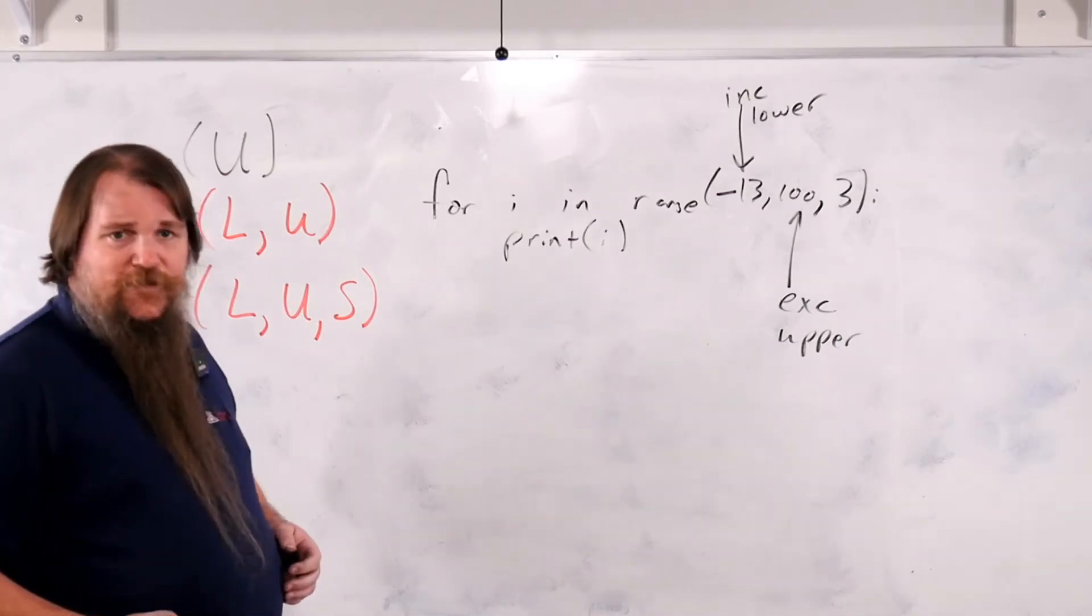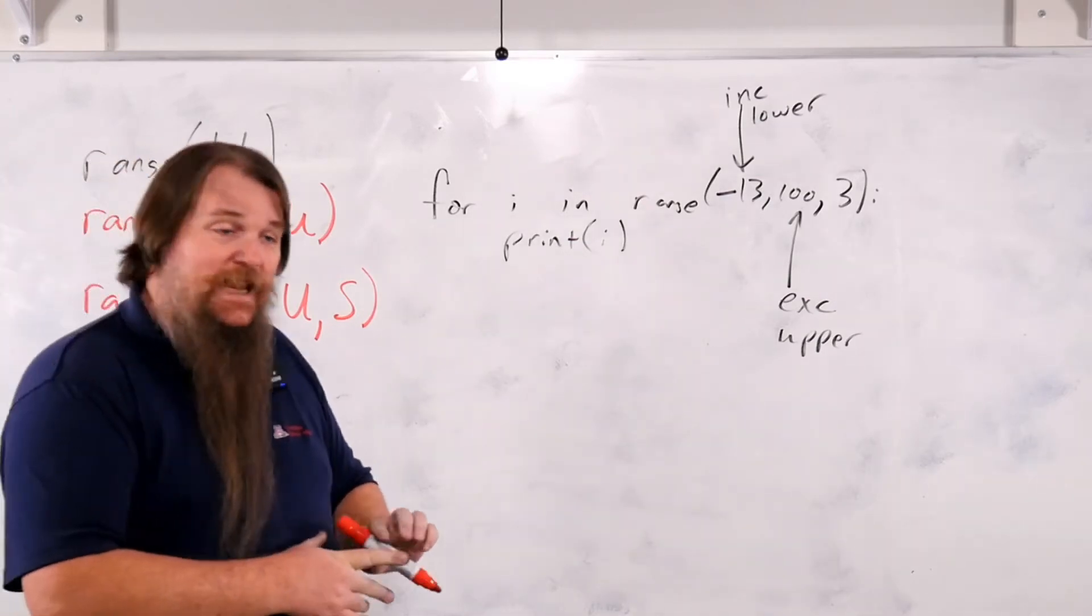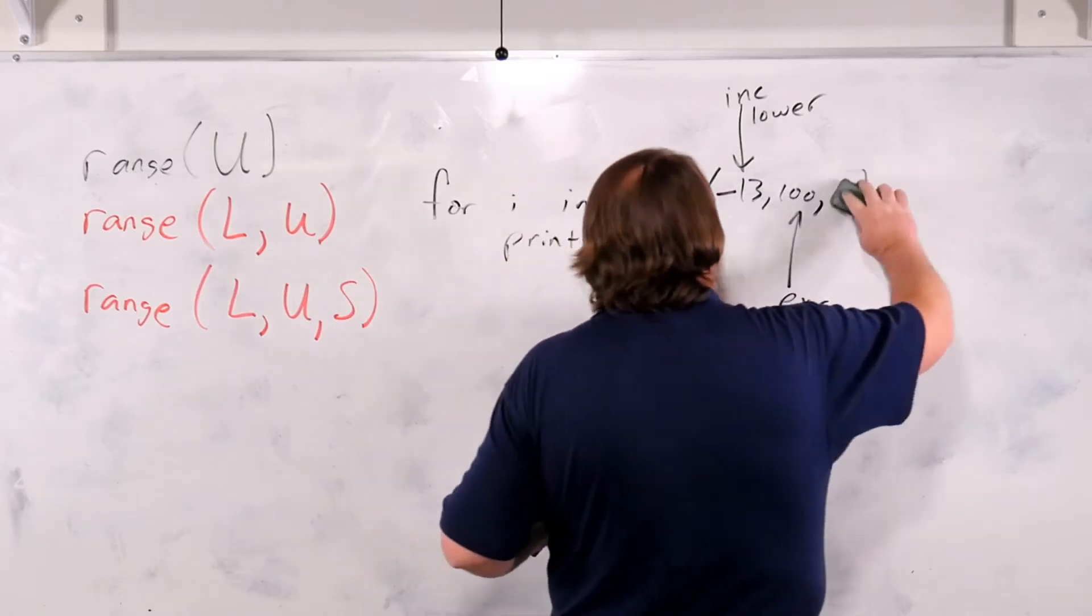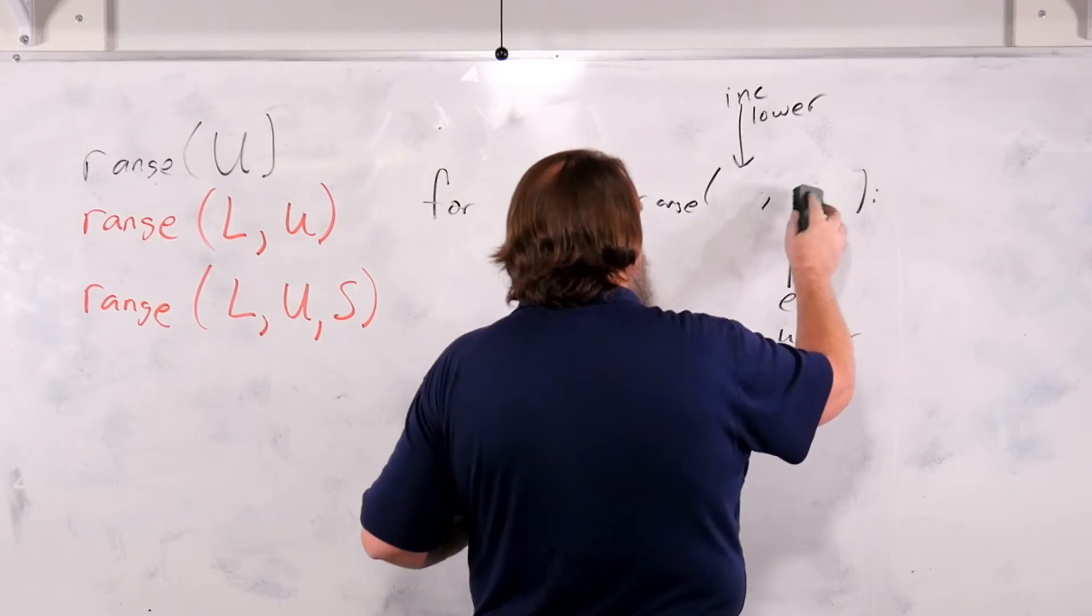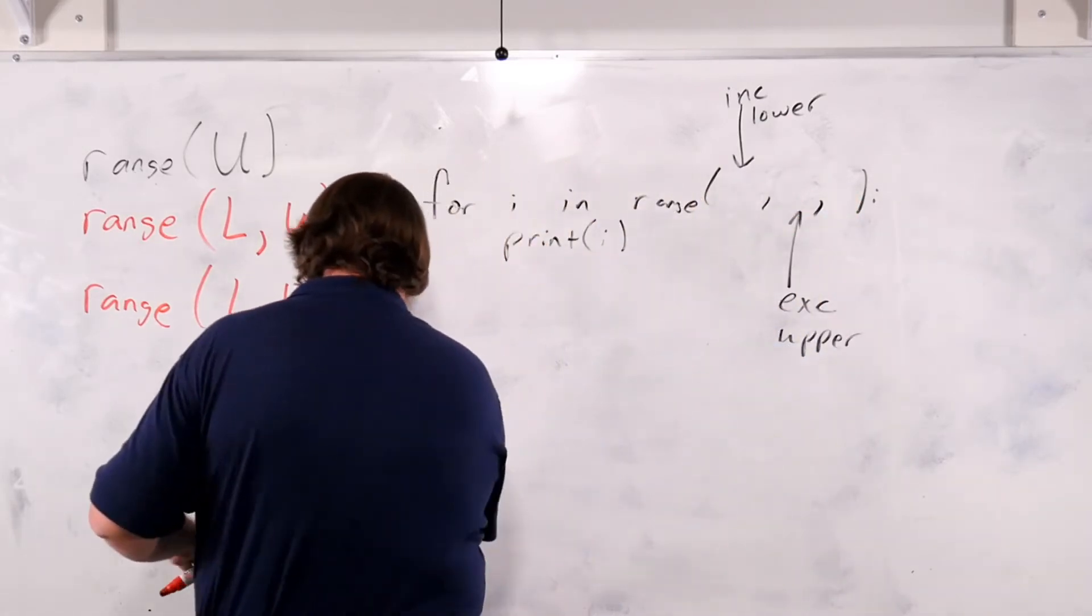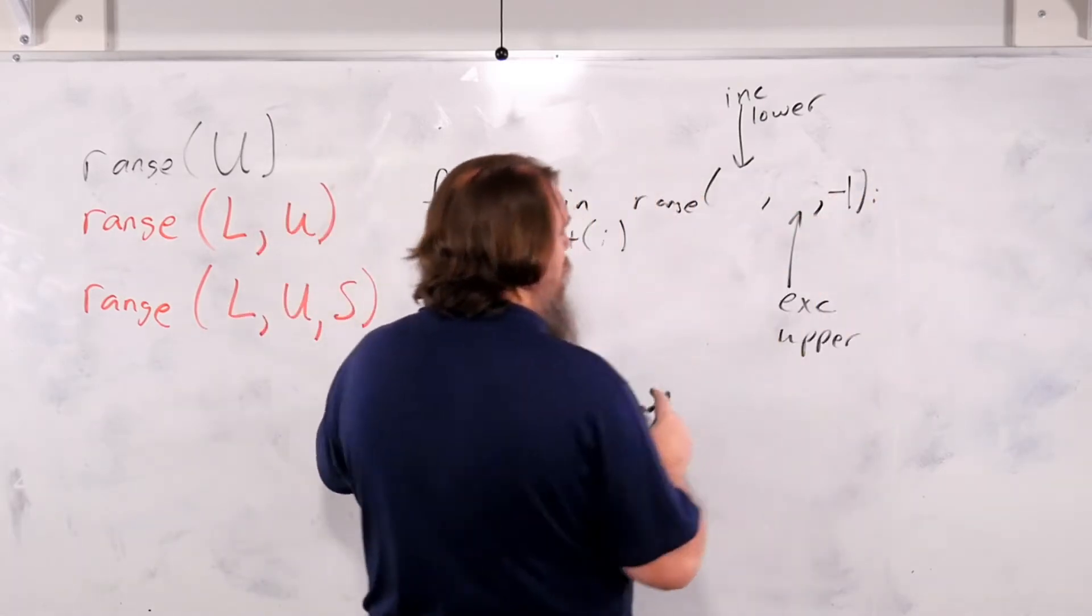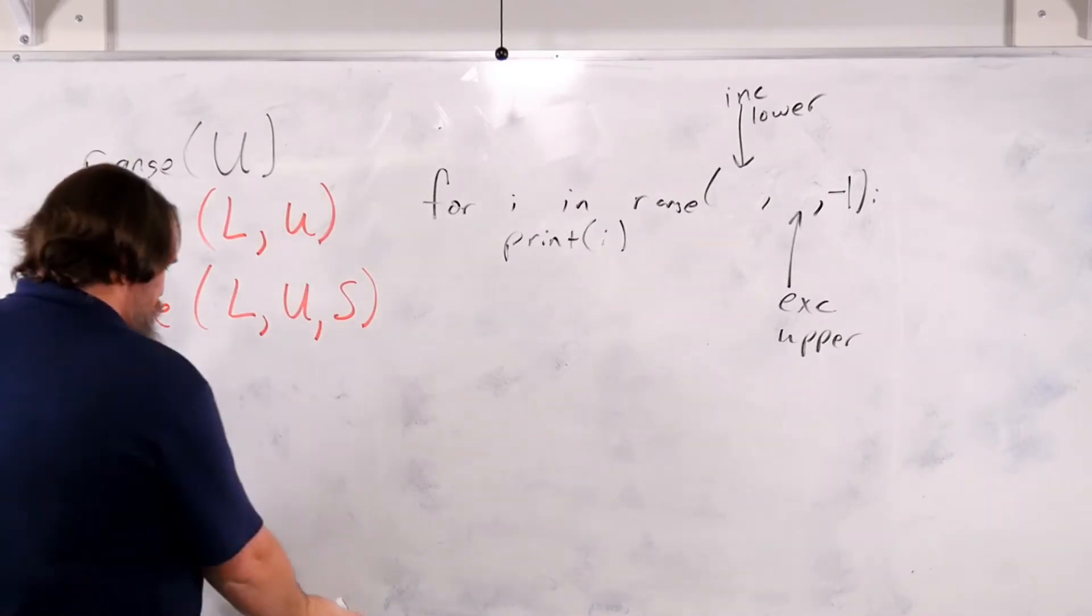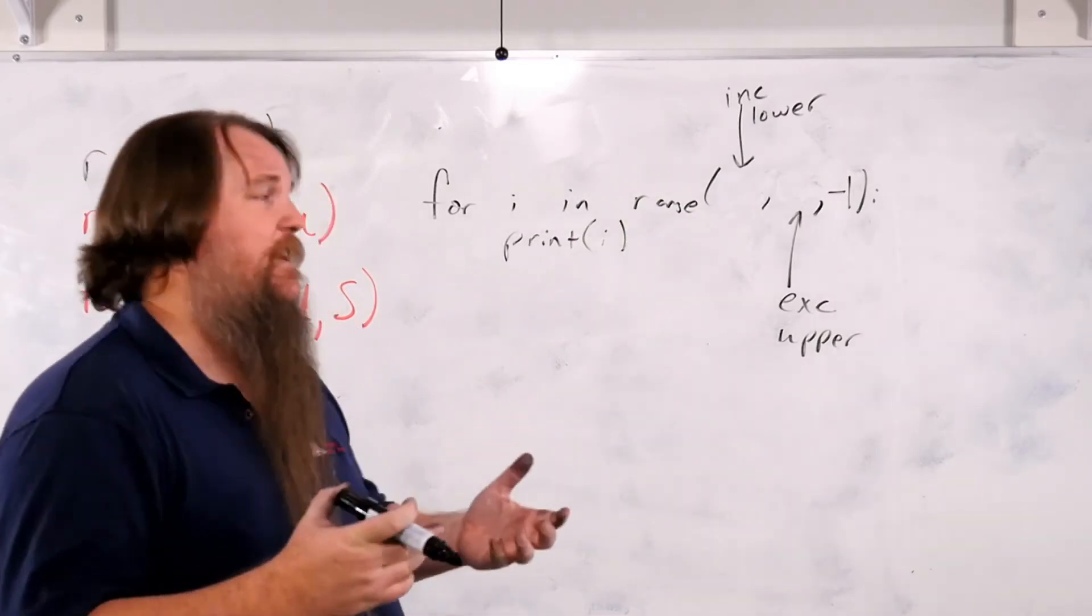Is there anything else that's interesting that you can do? Well, you could make the step value negative. That is allowed. It makes it a little weird to think about what these two bounds mean. But we'll show you how this works. So if this was minus one, for instance, this means that every time we go through the loop, we're going to decrement our value instead of increment it.